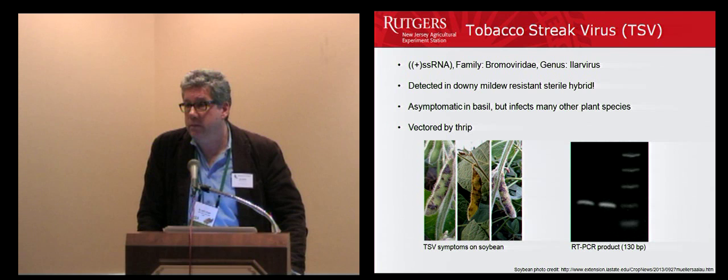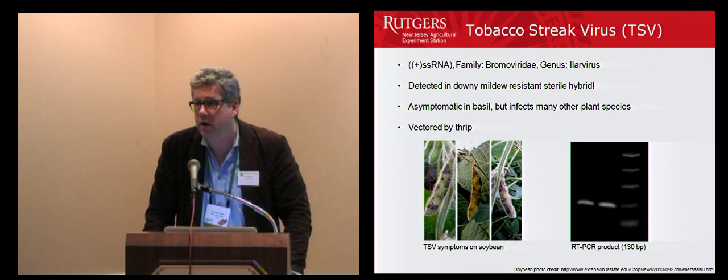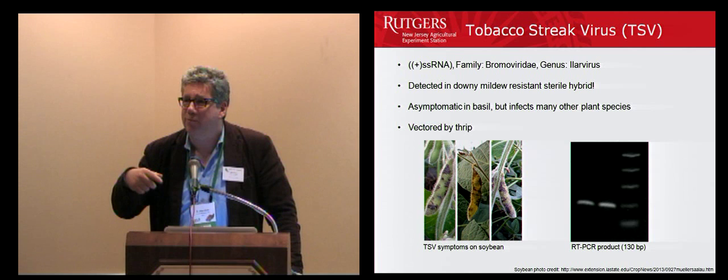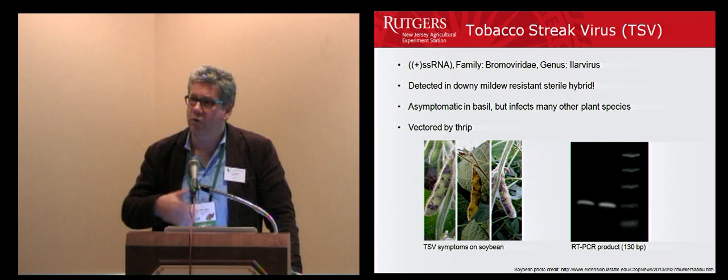This virus can be easily spread by thrips. We saw in the earlier data how high a percentage of growers — of the 13 reported — have thrips, and if you're a greenhouse grower, thrips are pretty common anyway. It's an almost innocuous virus — you don't see the symptoms, you don't really care about it — but as a breeder or source of material, we want to make sure our material is clean. So we did run into a problem with some of our genetic material having the tobacco streak virus.